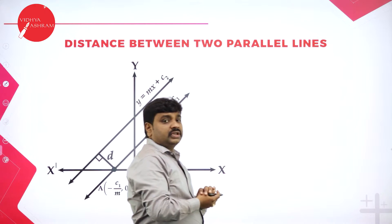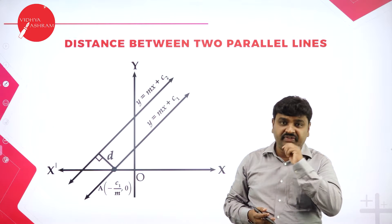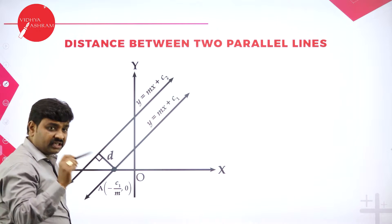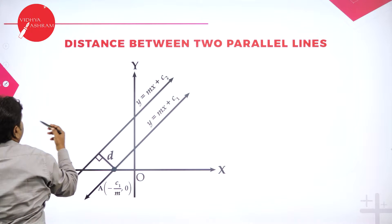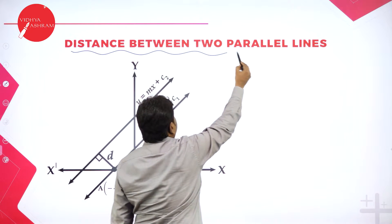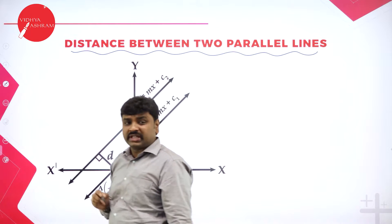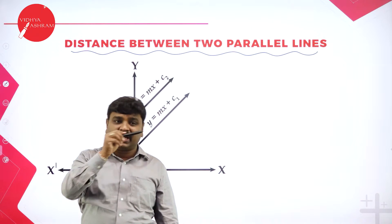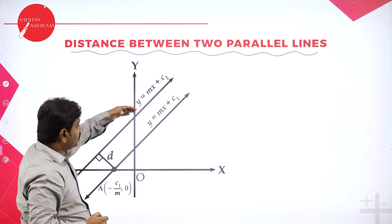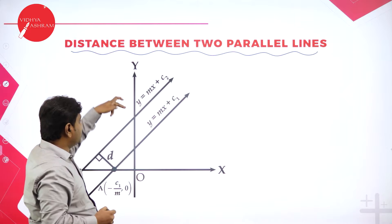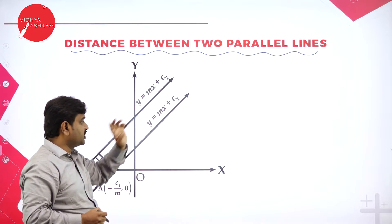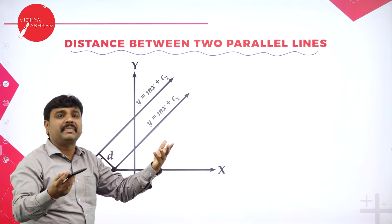Now we will go with an important derivation — let me derive a formula for the distance between parallel lines. In today's class, I will be deriving distance between parallel lines. Two lines are parallel means their slopes are equal. So let us take two lines: Y equals MX plus C1 and Y equals MX plus C2 — both having the same slope M, so they are parallel.